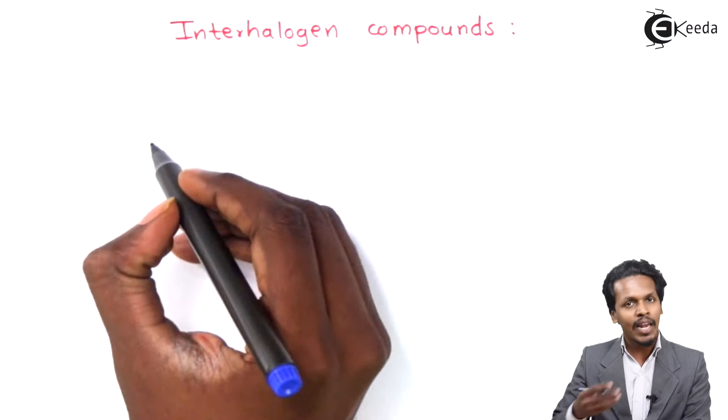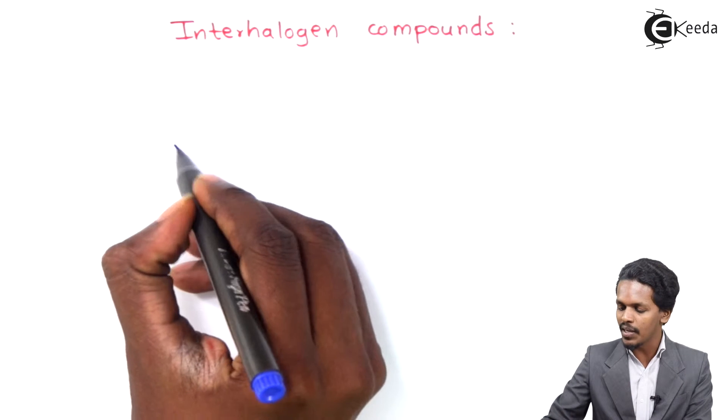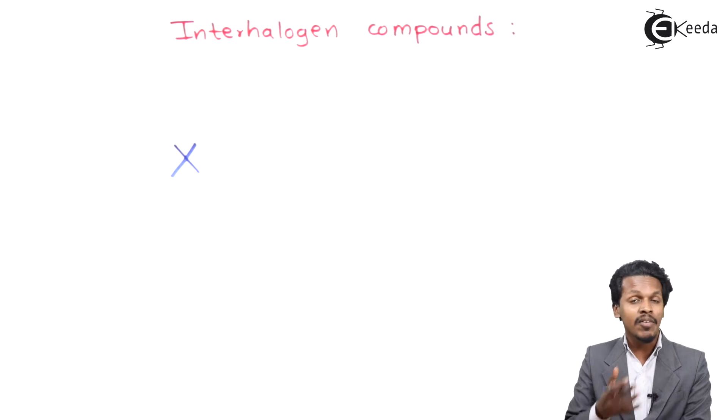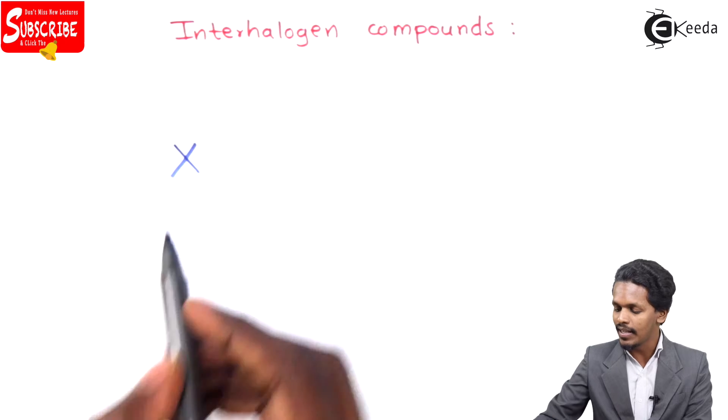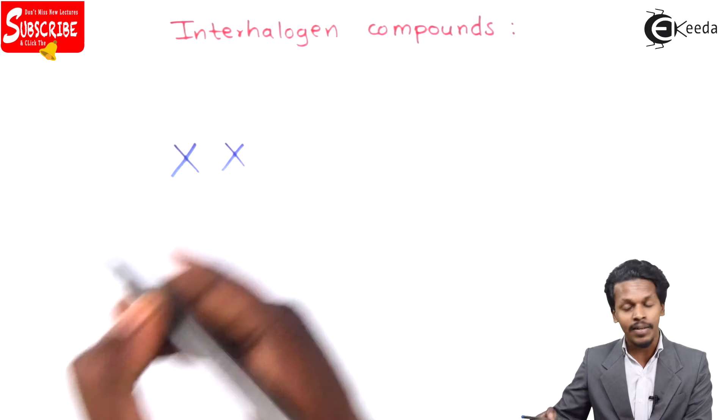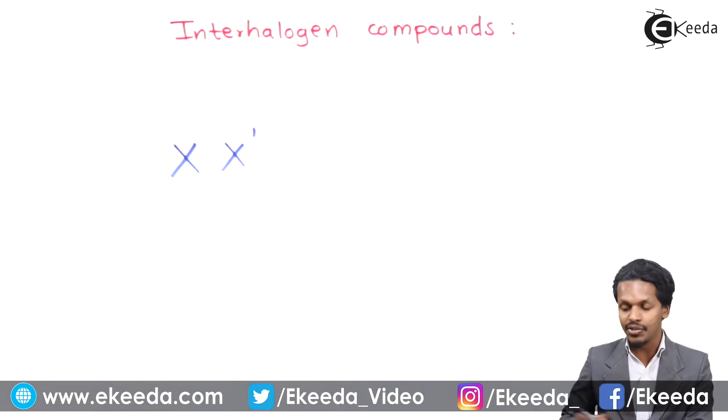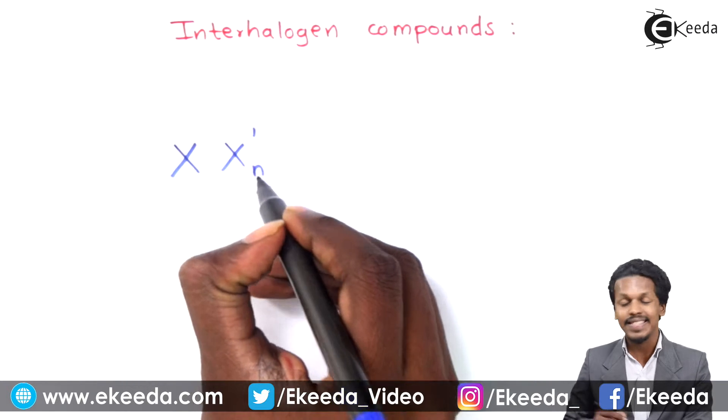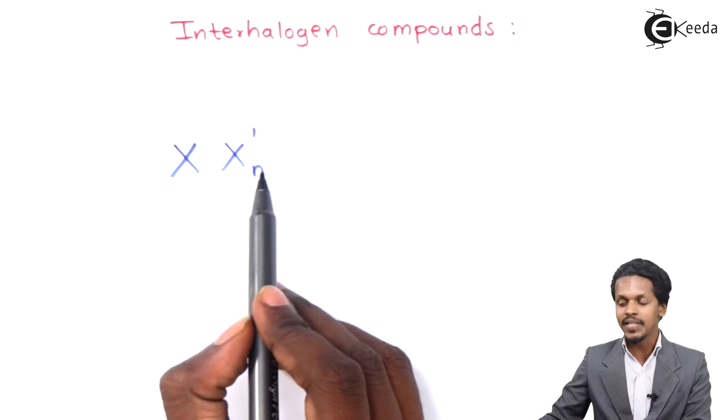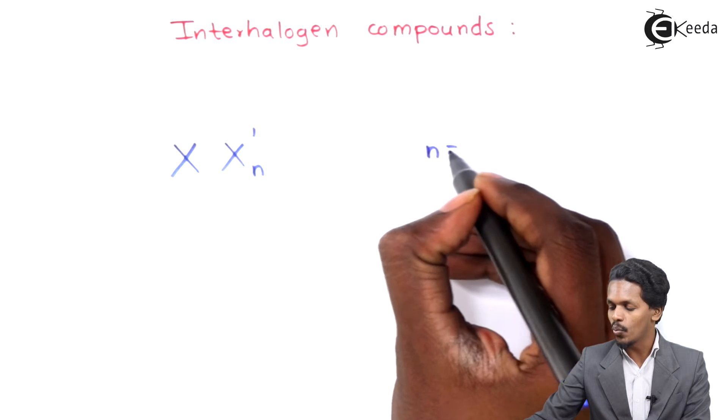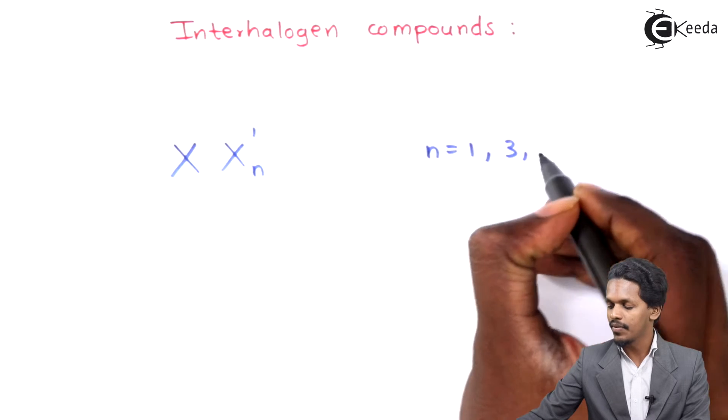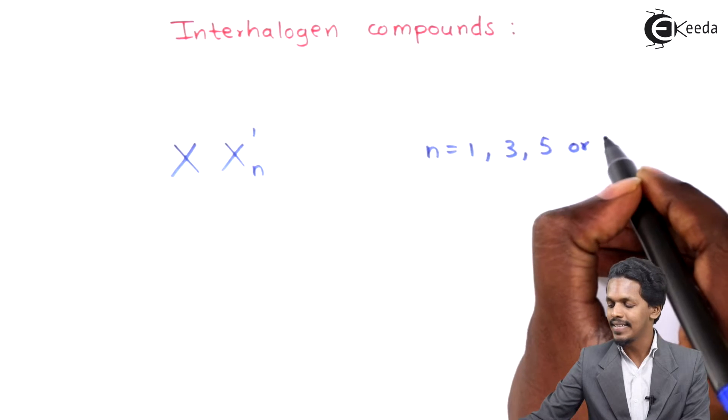For example, if we talk about halogens, we understand that halogens are represented by X. But as I mentioned earlier, there should be two or more different kinds of halogen atoms attached to it. That's the reason I am representing another halogen atom by X prime, and this is n. The n represents that n could be 1, 3, 5, or 7.